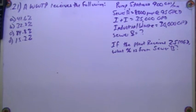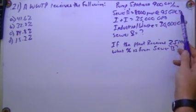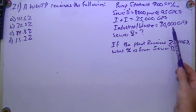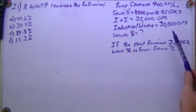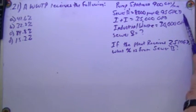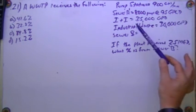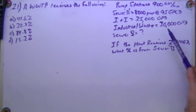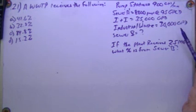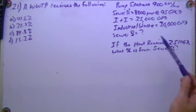If a wastewater treatment plant receives the following: the pump station sends 900 gallons per minute, Sewer A has 8,000 people at 95 gallons per capita per day, the plant receives 35,000 gallons per day in INI, industrial waste is 30 gallons per day, and Sewer B is unknown.